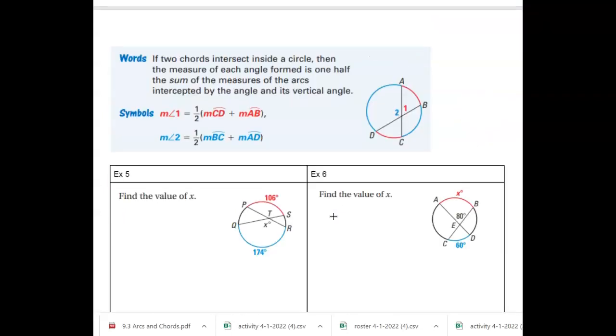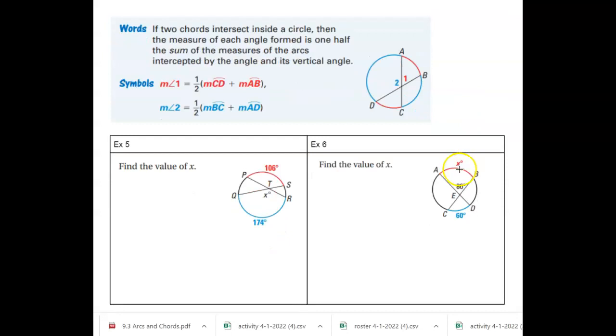Our last theorem says if you have two chords intersect in a circle, which we just saw, then the measure of each angle formed is half the sum of the measures of the arcs intercepted by the angle. And that's a lot of words, but once you see the picture, it'll make more sense.